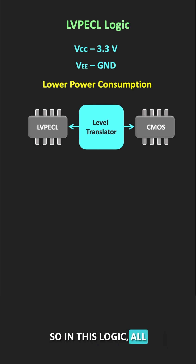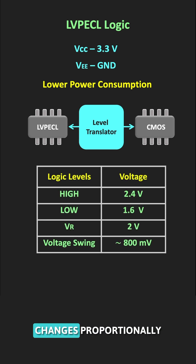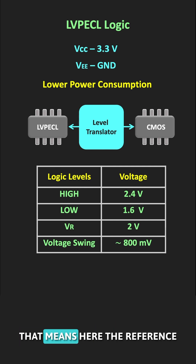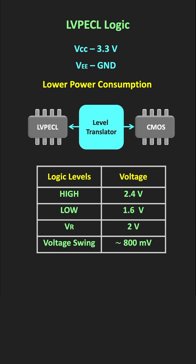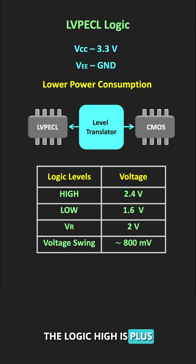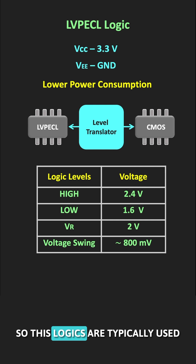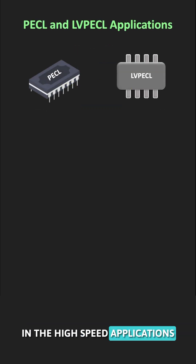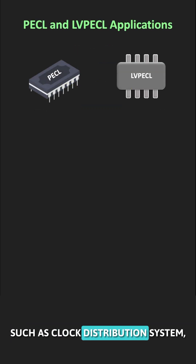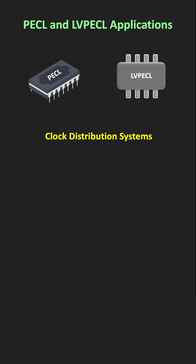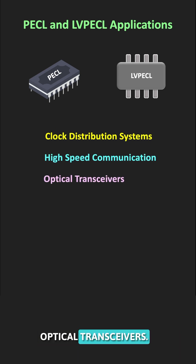In LVPECL logic, all voltage levels change proportionally. The reference voltage is around 2V, while the logic low and logic high are plus or minus 400mV around that voltage. These logics are typically used in high-speed applications such as clock distribution systems, high-speed telecommunications, and optical transceivers.